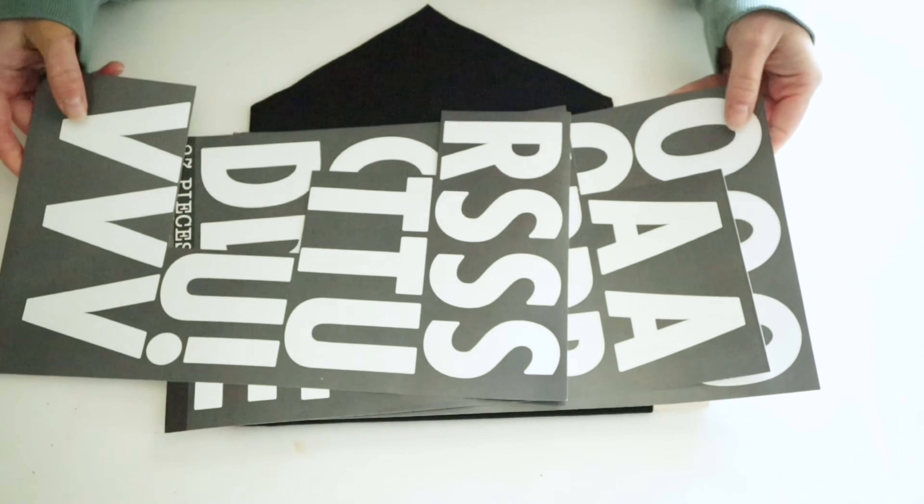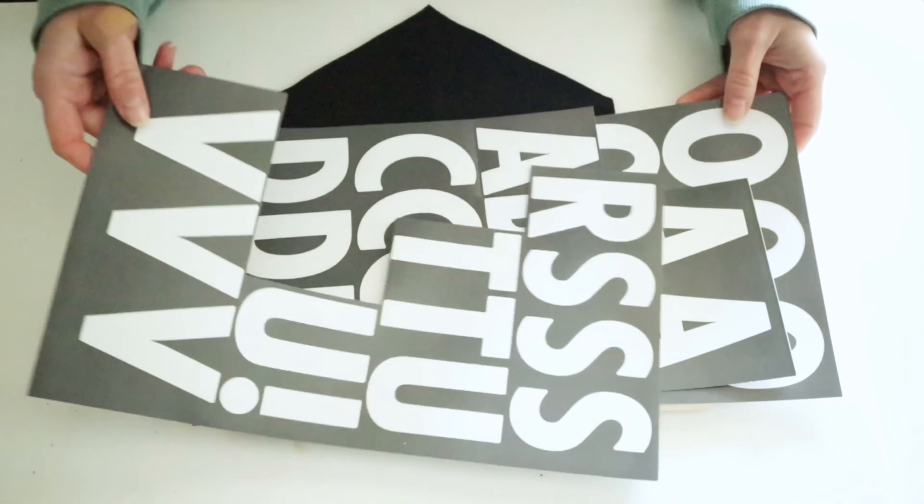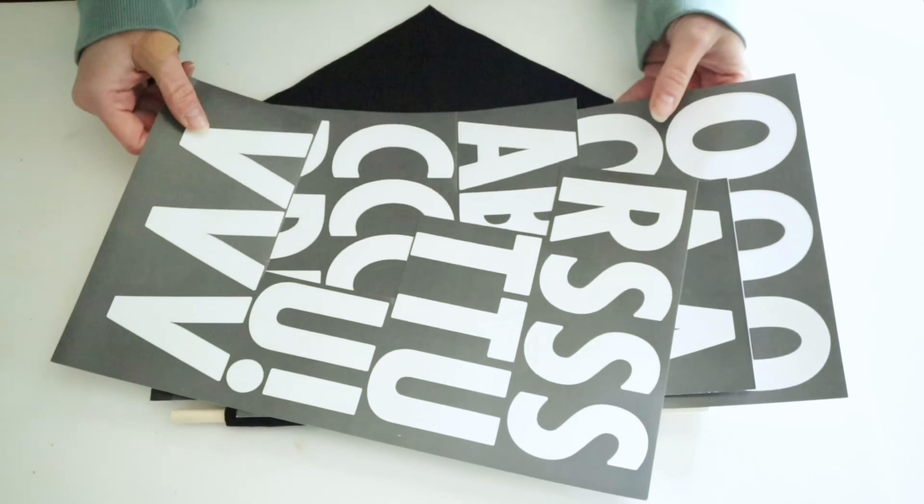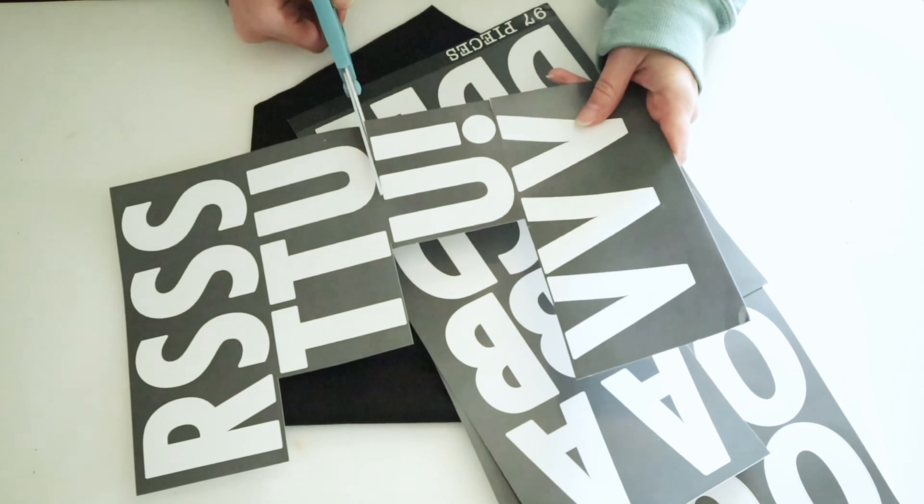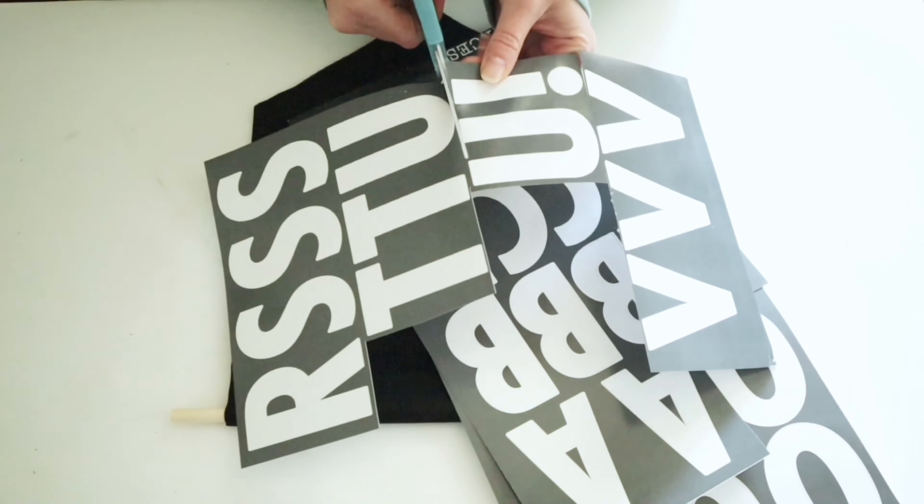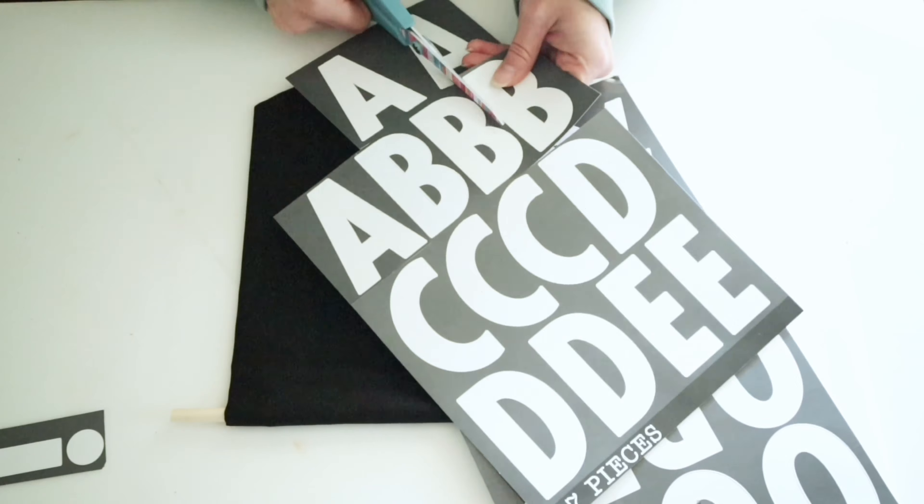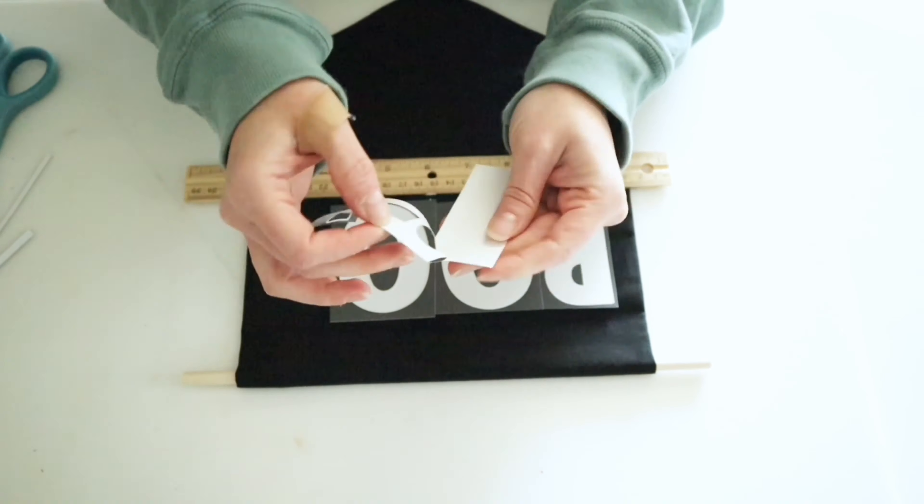For my wording, I'm going to be using these Dollar Tree stickers, but I'm not actually going to be using the stickers. I'm actually going to be using the background from the stickers to spell out boo and use as a stencil. So I just went ahead and cut out the letters that I'm going to be using and then I will peel these backgrounds from the sticker letters and place them onto my fabric.